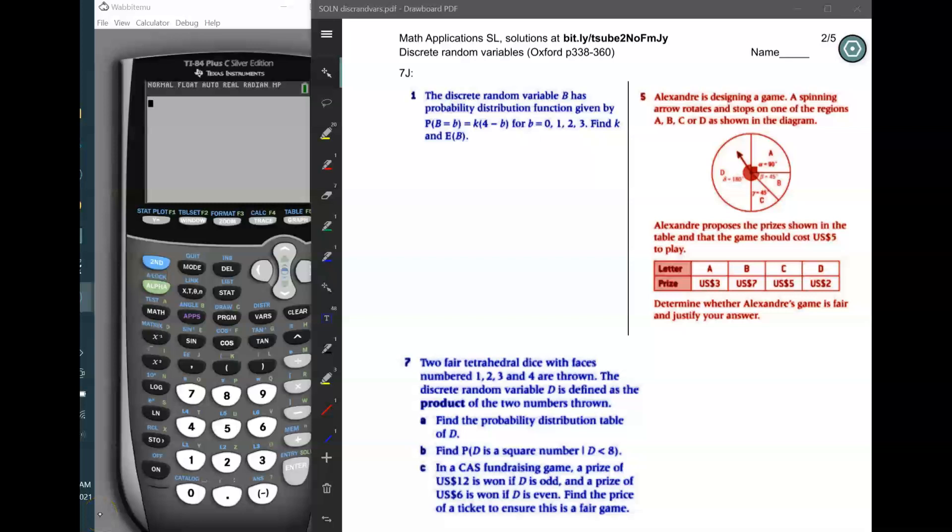Page two of discrete random variables. One, the discrete random variable B has a probability distribution function given by capital B equals k times four minus b. I know this notation might be confusing, but basically the important thing is the right side. The probability of little b happening depends on the value of little b, and little b could be zero, one, two, or three, and then k is the number you're looking for.